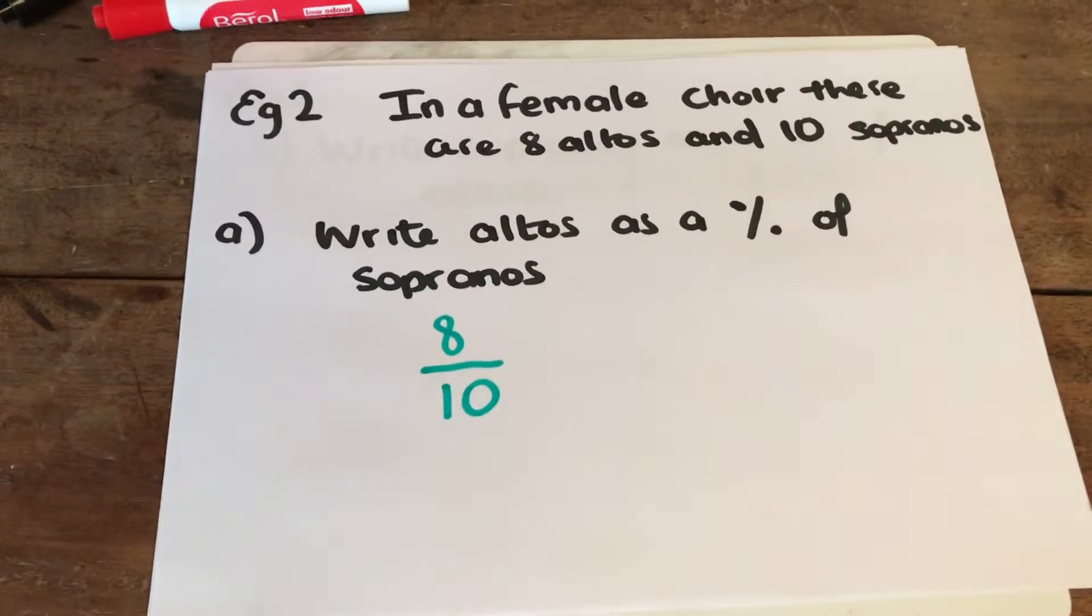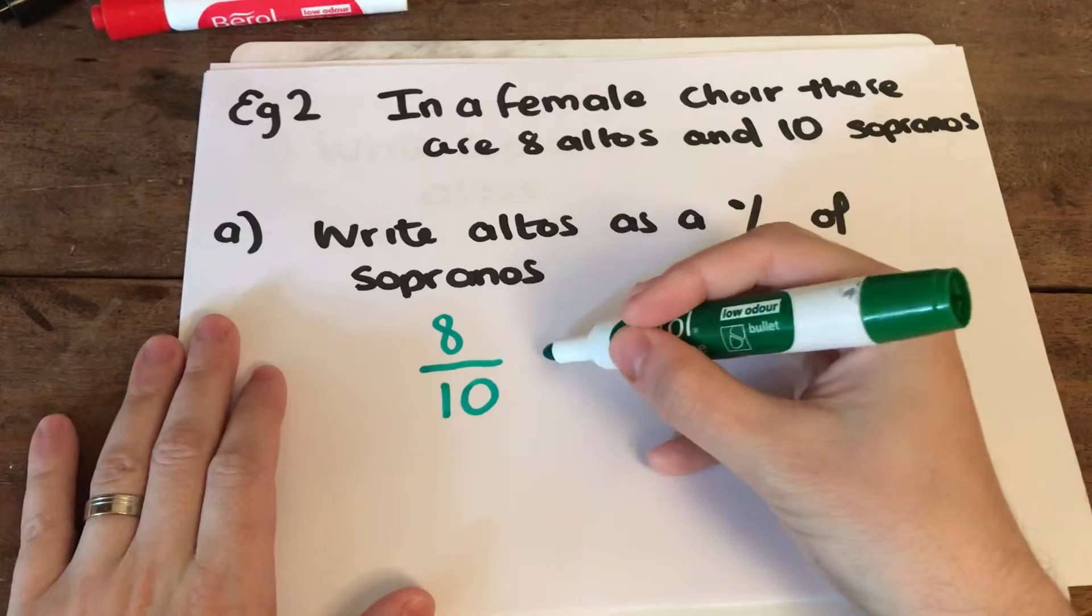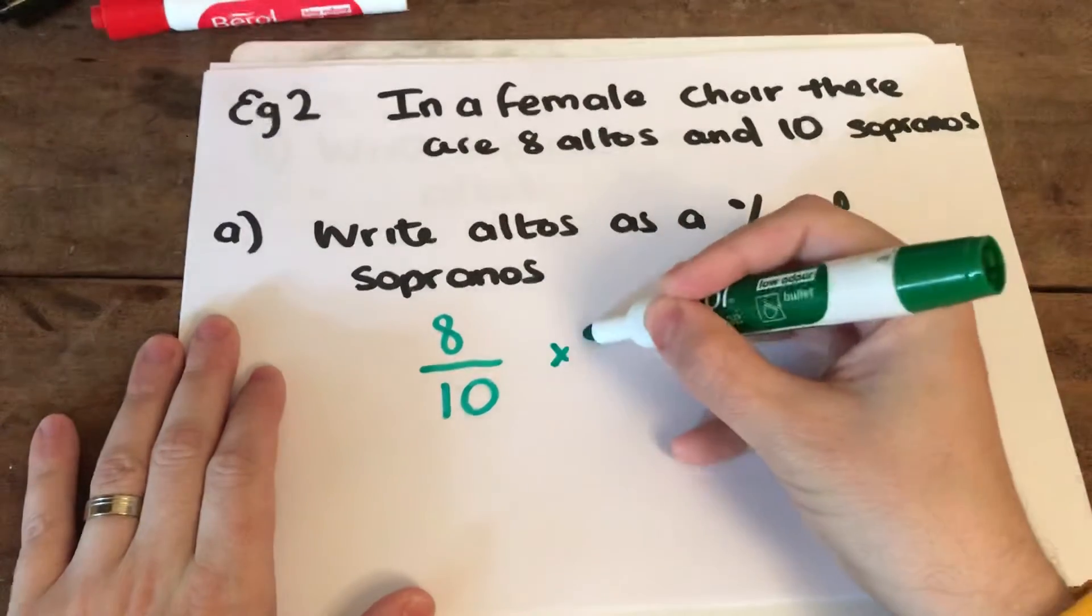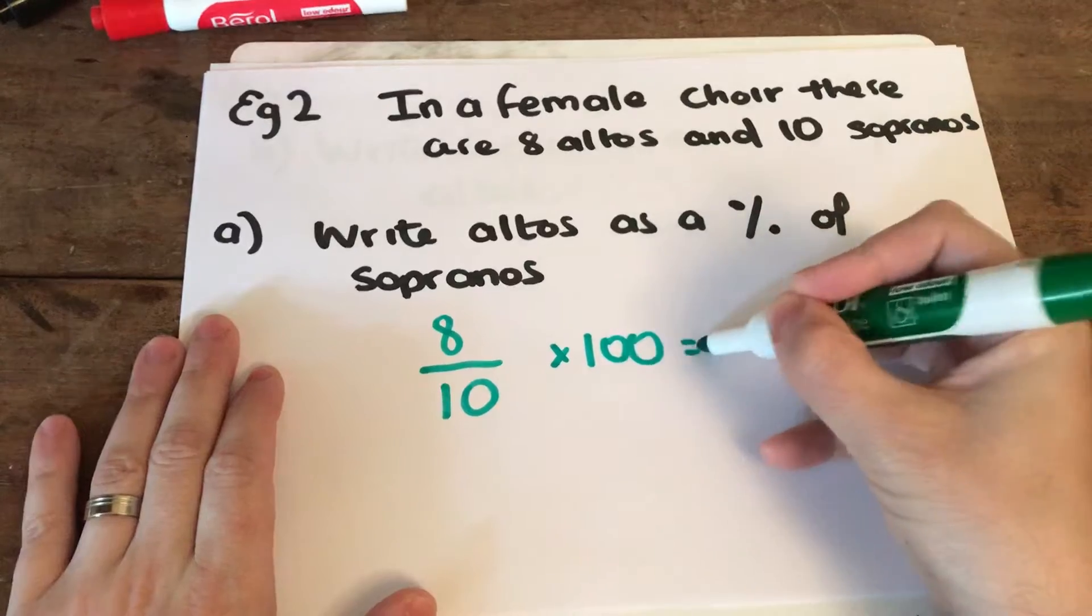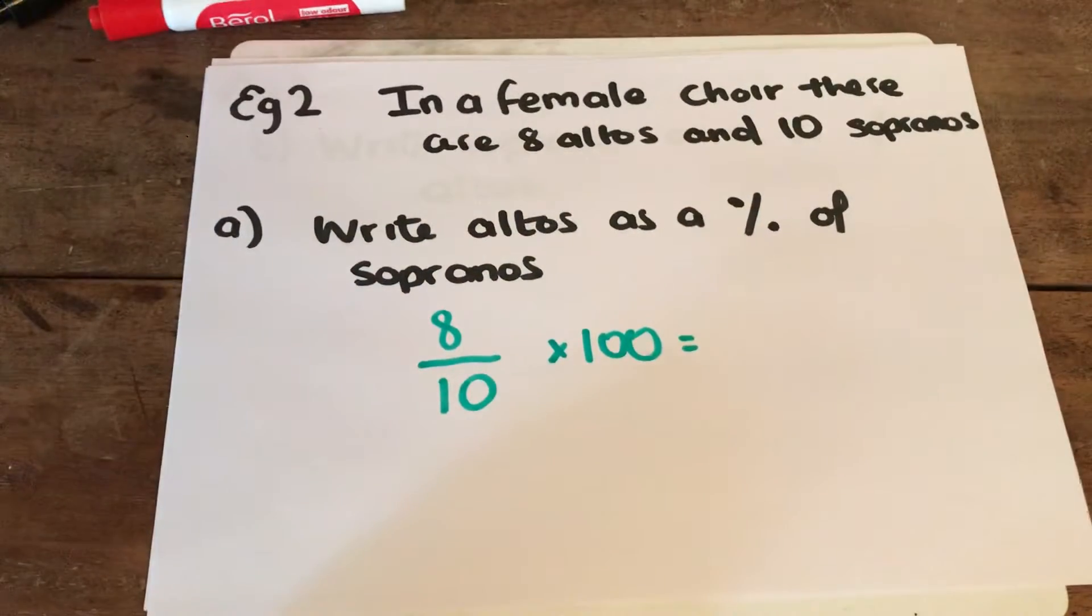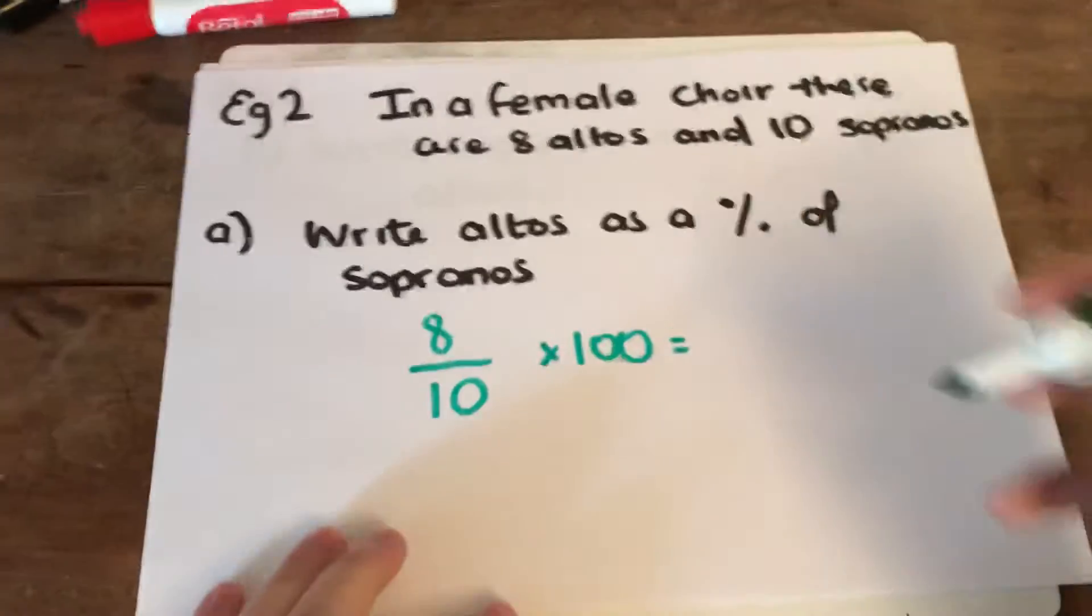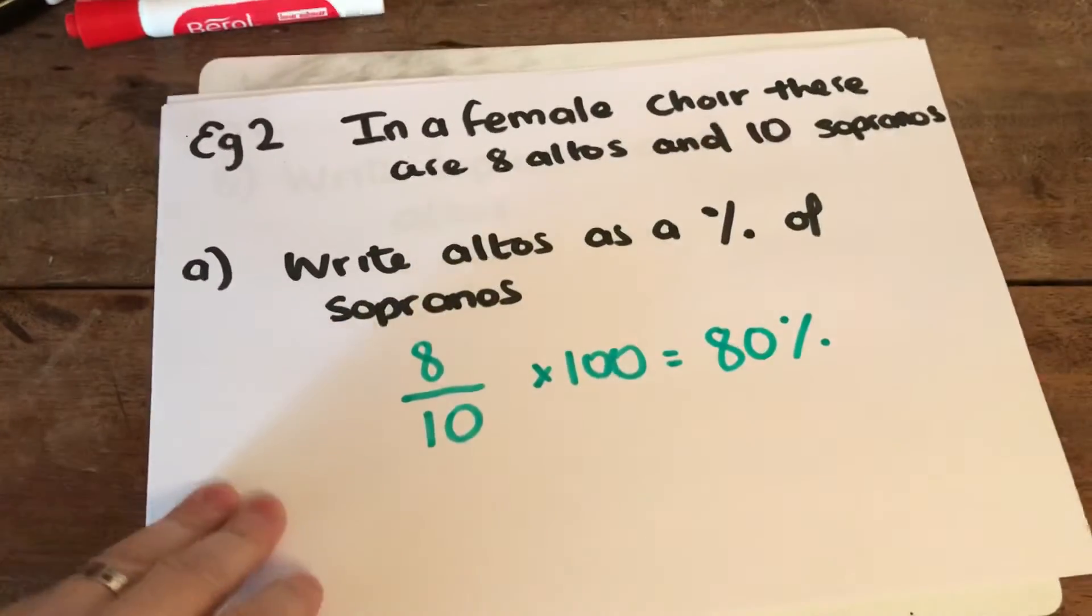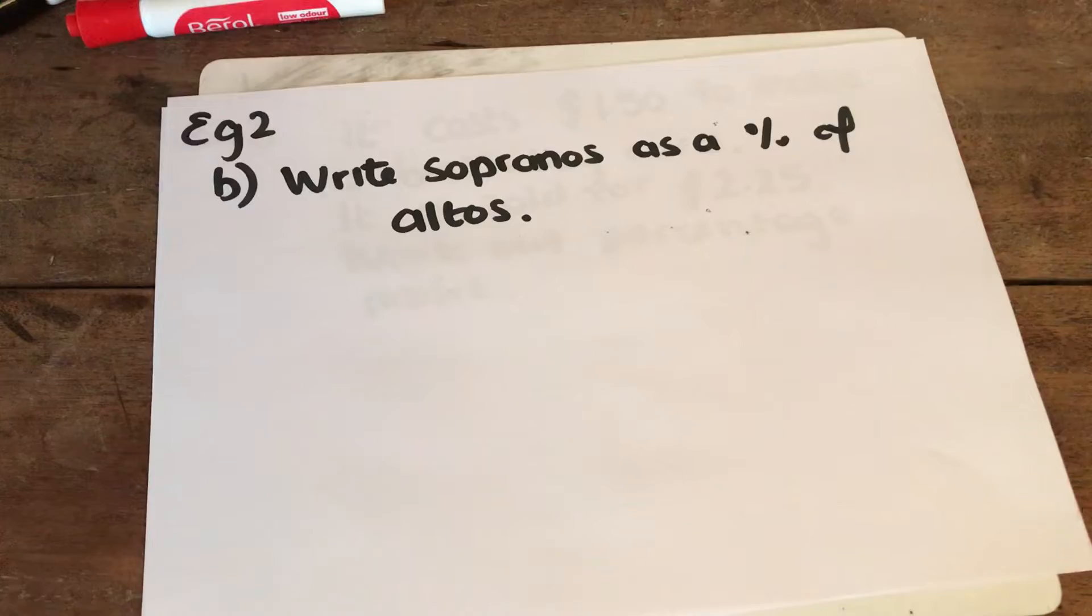You can then turn this into a percentage by timesing your fraction by 100 on a calculator if you want. So we could do that. Or, you can say that 8 out of 10 is the same as 80 out of 100 and your percentage becomes 80%. For the second part of this,